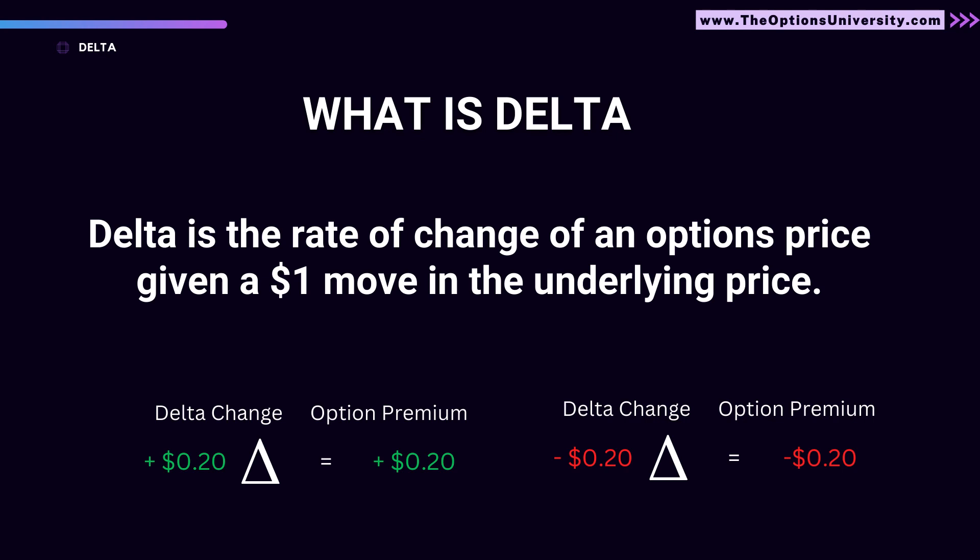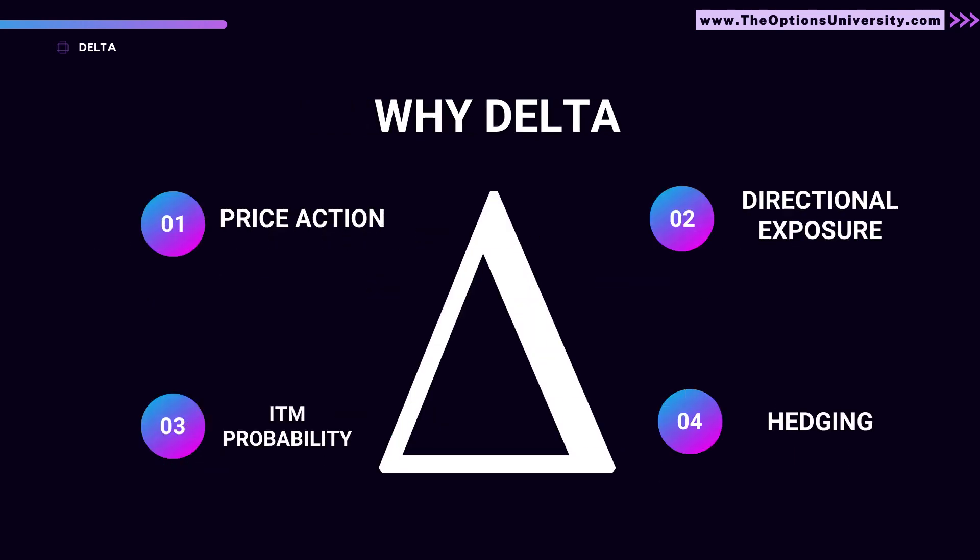We'll take a stock example shortly to make this clearer. There are four things decided by delta, or four reasons why we use delta. The first is price action, which we already saw in the definition — delta decides the option's premium price.